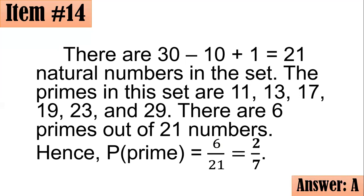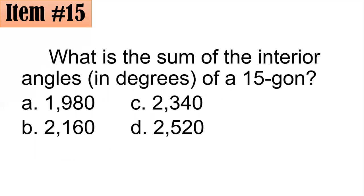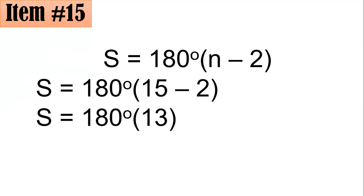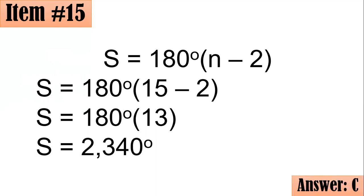Okay. Number 15. What is the sum of the interior angles in degrees of a 15-gon? Is it 1,980, 2,160, 2,340, or 2,520 degrees? What do you think? We have to remember that the formula for the sum of the interior angles of any convex polygon is 180 degrees times N minus 2, where N is the number of sides it has. Since you have a 15-sided polygon, we will replace N with 15. So, from here, 15 minus 2 is 13. So, you have 180 degrees times 13, which is 2,340 degrees, letter C.